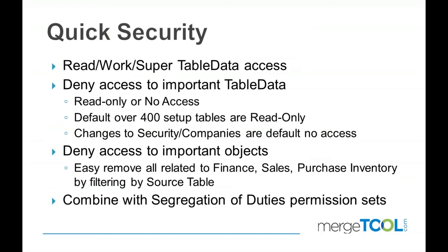Quick security is the way to accomplish a lot of things with security in just a few hours. We build three levels of access — reading, working, and super — all built simply by installing and running our wizard. Then you can start denying things you find important. For data, you can make it read-only or make certain things no access, like a payroll solution. We have found over 400 tables in NAV that a user who only works in the system really doesn't need to change — things like payment terms and posting groups. Without doing anything extra, we will lock down those tables for a working user.